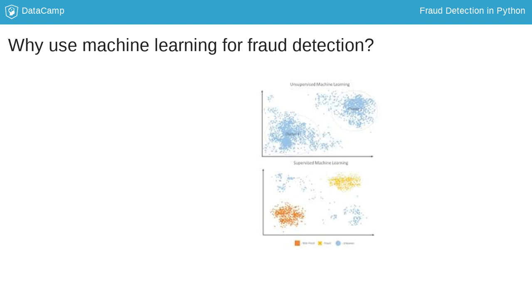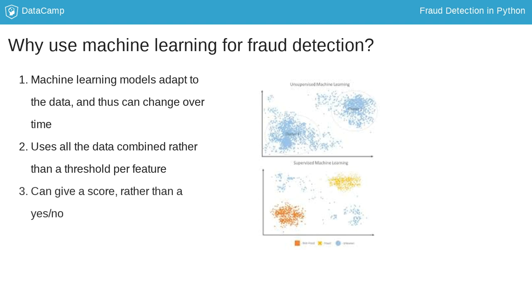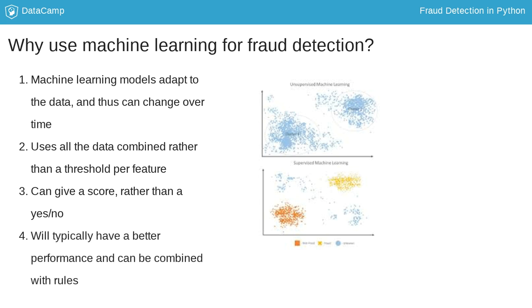Machine learning models don't have these limitations. They will adapt to new data and therefore can capture new fraudulent behaviour. You are able to capture interactions between features and can work with probabilities rather than yes-no answers. Machine learning models therefore typically have a better performance in fraud detection. However, machine learning models are not always the holy grail. Some simple rules might prove to be quite capable of catching fraud, so you want to explore whether you can combine models with rules to improve overall performance.